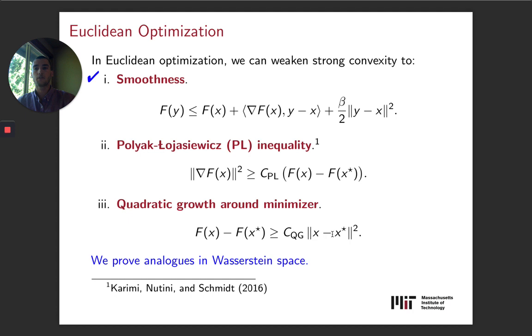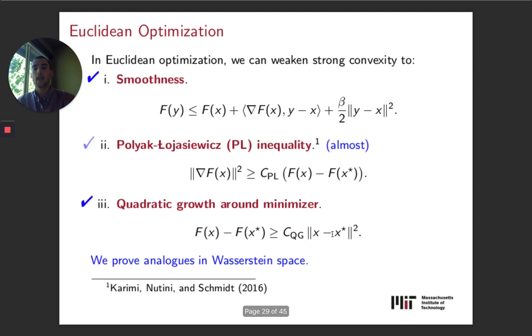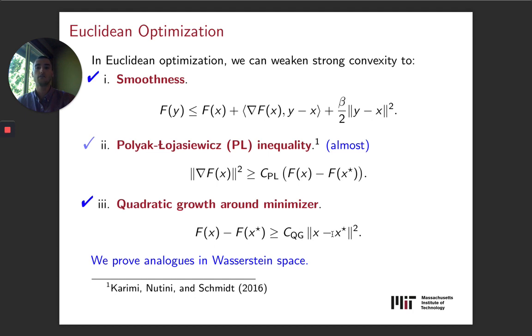The first assumption is actually pretty easy to guarantee, and it follows basically from the positive curvature of Wasserstein space. The third assumption we can get more or less unconditionally under some pretty weak conditions. We can get a quantitative quadratic growth condition. And it's the second assumption that we can only partly fulfill.